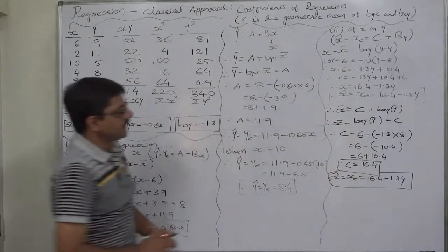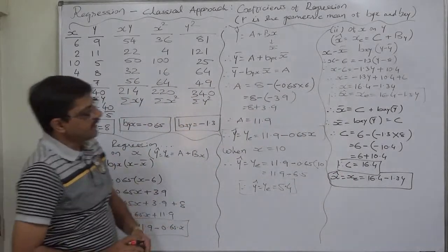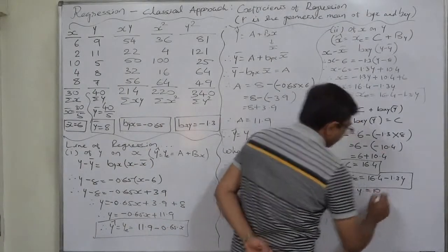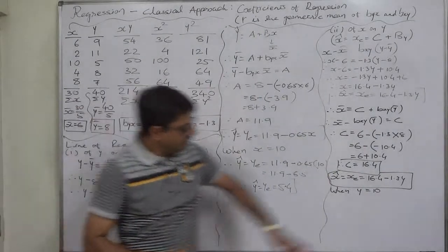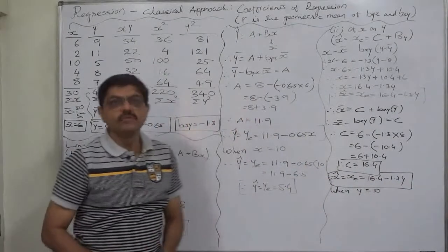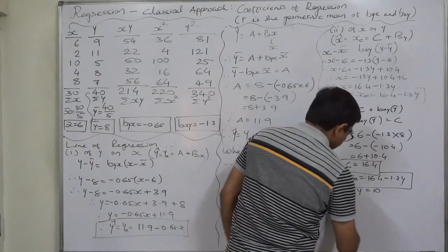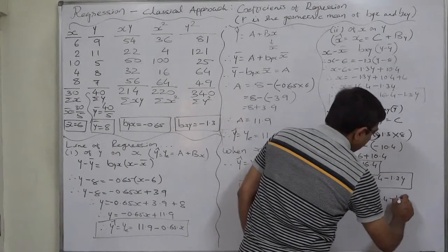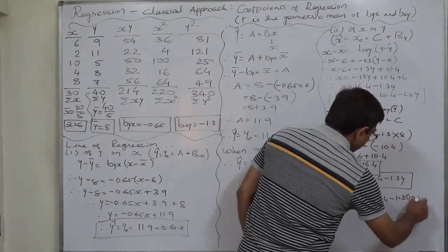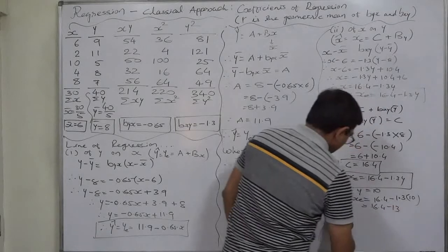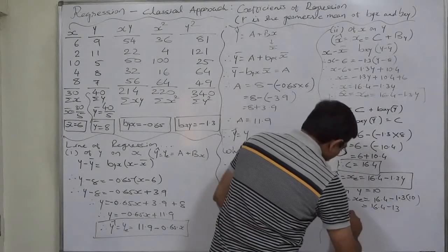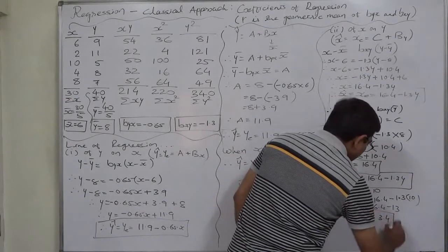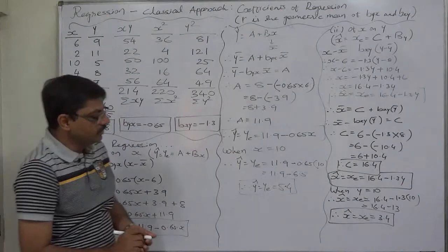When y equals 10, x-estimated equals 16.4 minus 1.3 times 10, which is 16.4 minus 13. So the estimated value of x comes to 3.4 when the independent variable y takes the value 10.